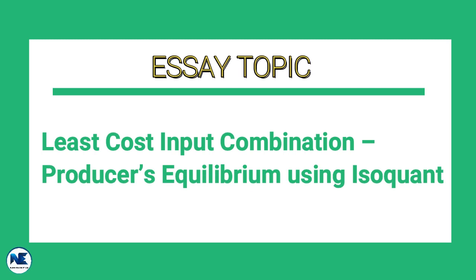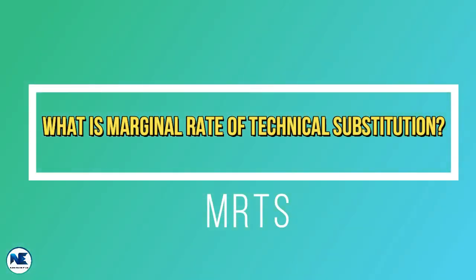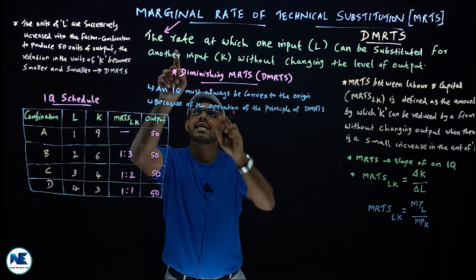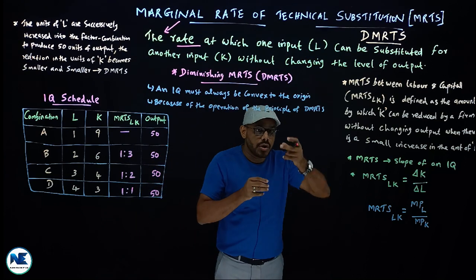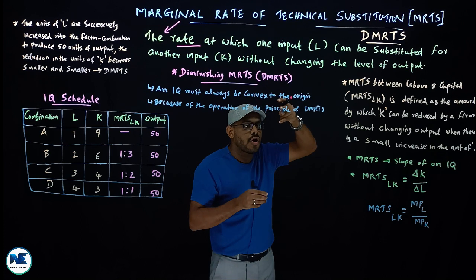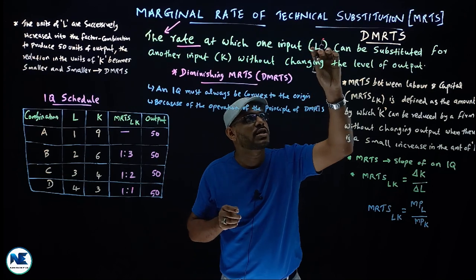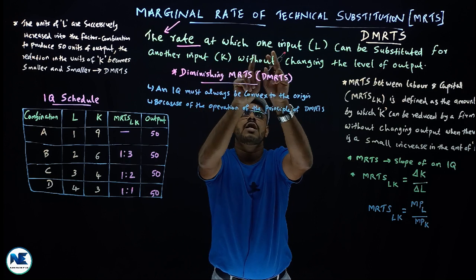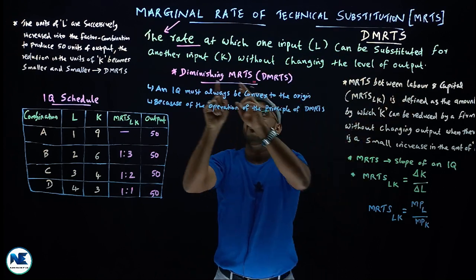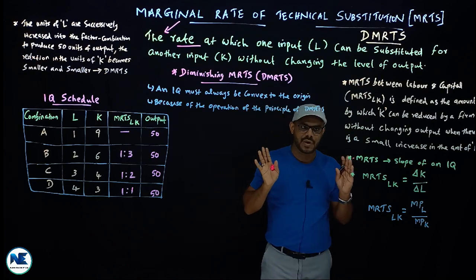We will also discuss diminishing MRTS, and then producer equilibrium as a topic. Let me start with the simple meaning of MRTS. Marginal Rate of Technical Substitution is the rate at which one input can be substituted for another input — that is, labor and capital — without changing the level of output.